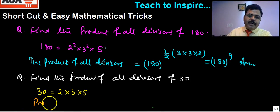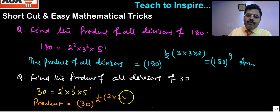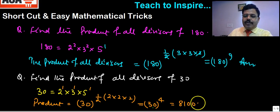So here the product of divisors, as per our formula, product of all divisors, the required product will be 30 to the power half of number of divisors. And number of divisors can be obtained as 2 into 2 into 2, that is 30 to the power 4, that is 810,000. That will be the answer.